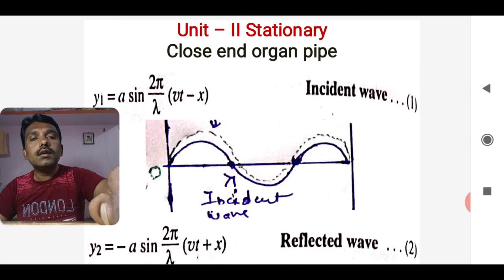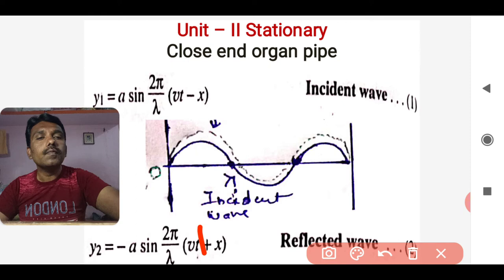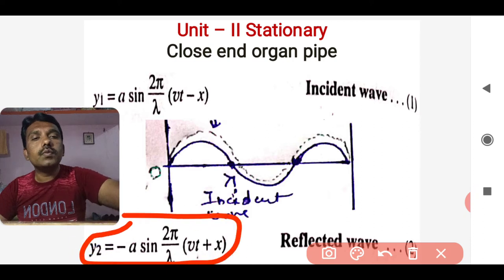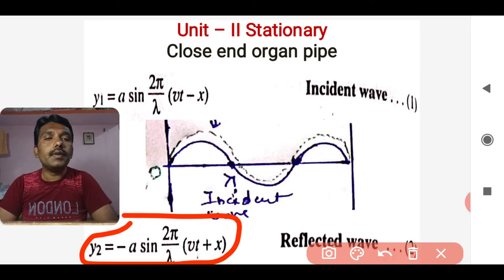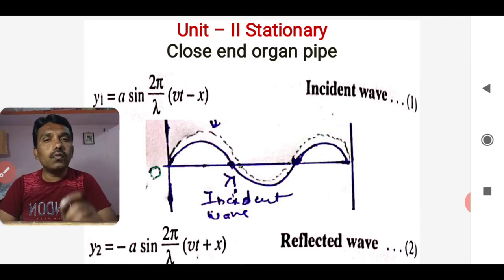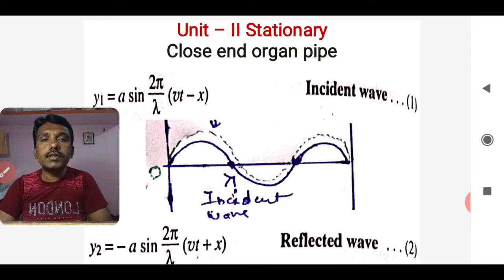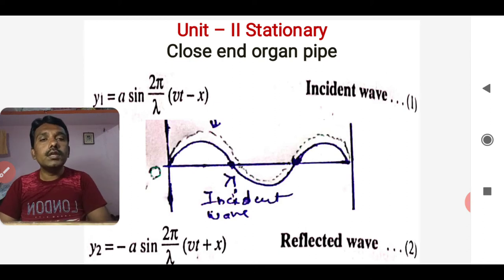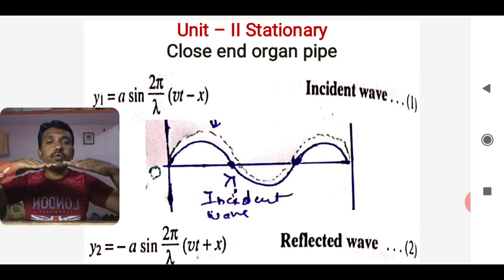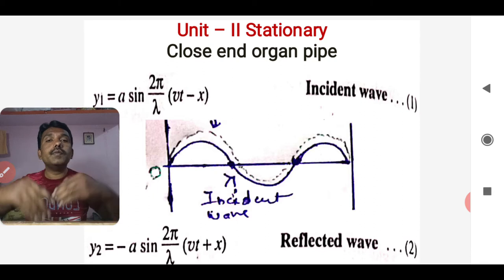Due to the phase change of 180°, this negative sign appears. It should come to a trough but it does not — that's why the phase change of 180° is there. Due to this, the negative sign is used. As the direction is changing, we know the reflected wave is going to have a plus sign in the x-term. So when the incident and reflected waves of the same amplitude and frequency superimpose, the resultant wave will be a stationary or standing wave.